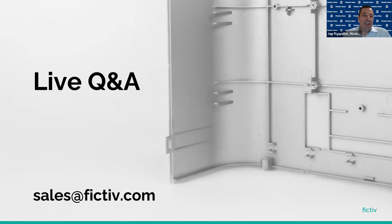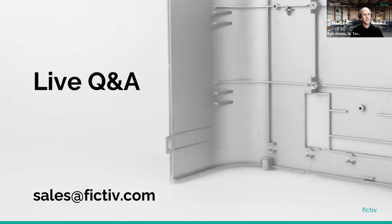Q&A: FICTIV does low volume tooling for overmolding. The two-separate-molds approach is common for low volume production. Low volume is defined differently by everyone, but runs up to 15,000–20,000 parts are common.